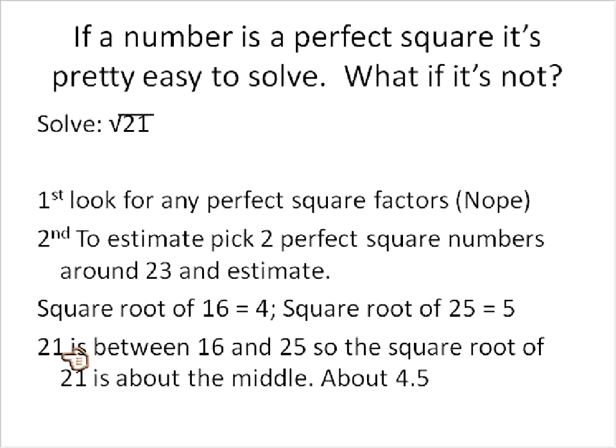And we look at it and say, well, 21 is right about between 16 and 25. So the square root of 21 is right about the middle between the square root of 16 and the square root of 25. So that means it's approximately 4 and a half. We'll show some examples of how to do this a little bit more.